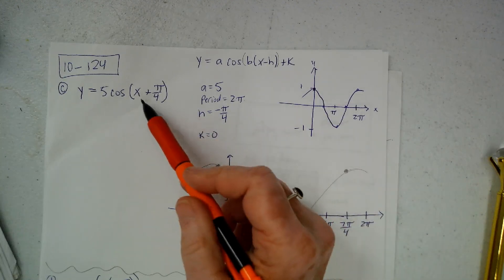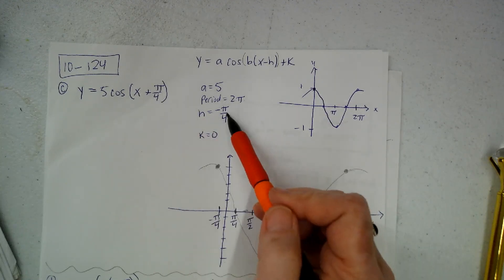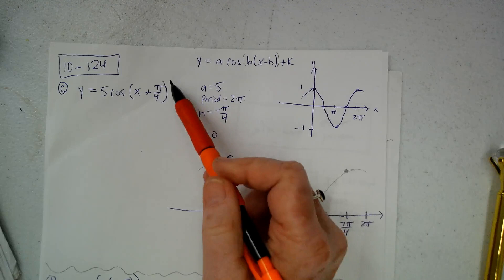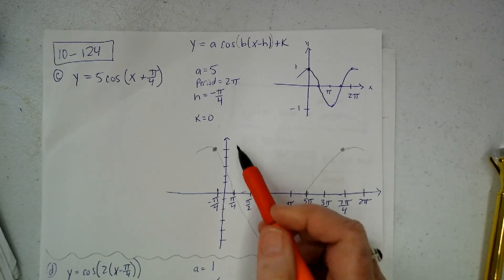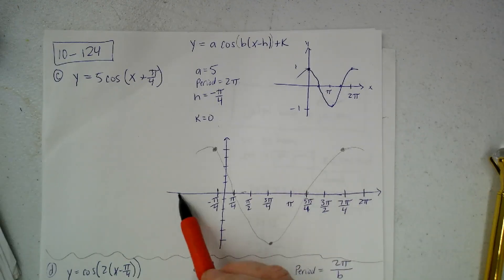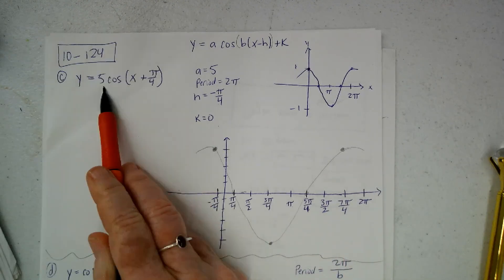H, you know how it's x minus h, so h is negative π over 4. And k, there's nothing added, so k is 0. So I'll sketch an axis. And I know that this is going to be my center line here. I know my amplitude is going to be 5.